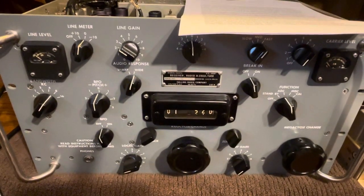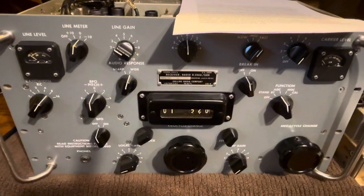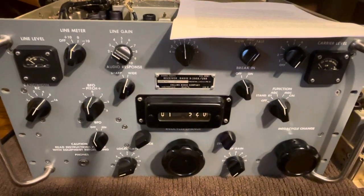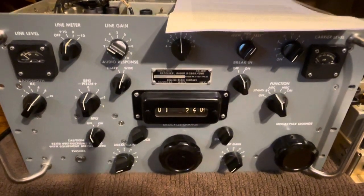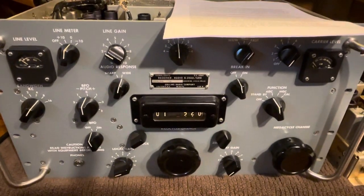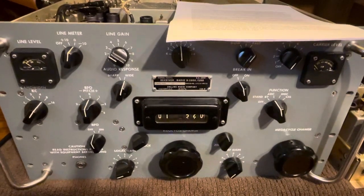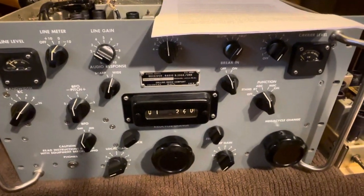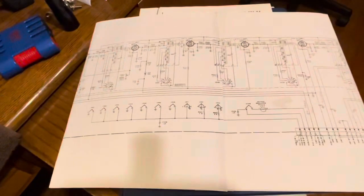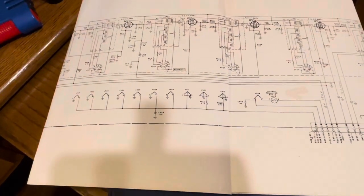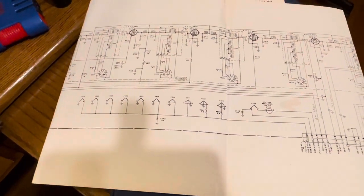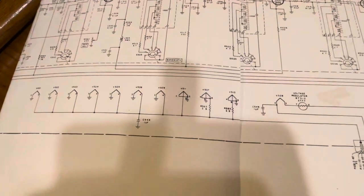How do you do that? Well, the R390 IF deck has filament voltage of about 25 volts, the R390A is 6.3 volt filament. So all you got to do, it's easy when you say it fast, is to convert the filament voltages to 6.3 so that you can use it in the R390A.